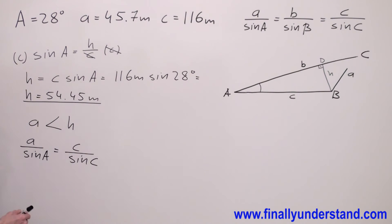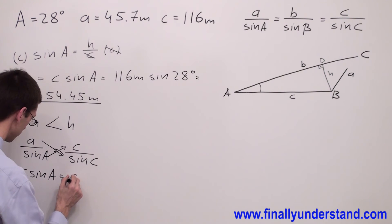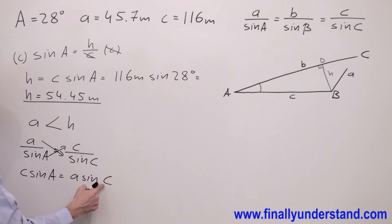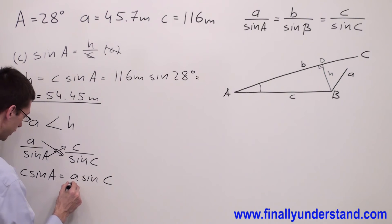Next, what I'm going to do is solve this formula for sine of angle C. I have to cross multiply, and I have C sine of angle A equals A sine of angle C. I'm looking for sine of angle C, that's why I'm going to divide both sides of my formula by A.